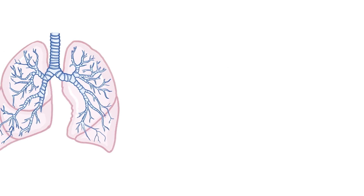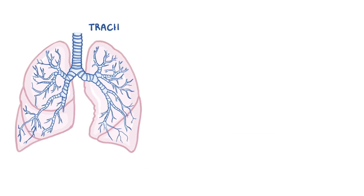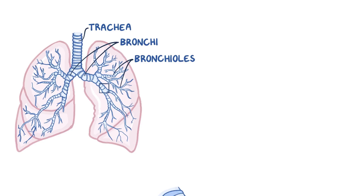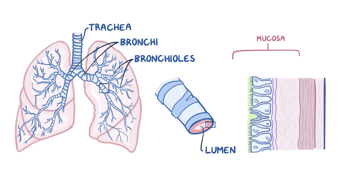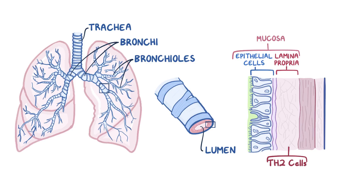So if we take a look at the lungs, you've got the trachea, which branches off into right and left bronchi, and then continues to branch into thousands of bronchioles. In the bronchioles, you've got the lumen, the mucosa — which includes the inner lining of epithelial cells as well as the lamina propria — which contains many cells like the type 2 helper T cells, B cells, and mast cells.